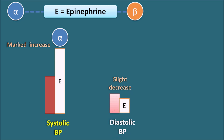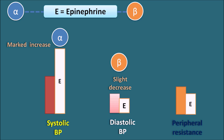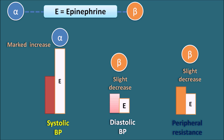The slight decrease in diastolic blood pressure by epinephrine is because of its selectivity toward beta receptors. As epinephrine acts on beta receptors, it produces vasodilation resulting in a fall in blood pressure. Because epinephrine is not completely selective for beta receptors, only a slight decrease in diastolic blood pressure is observed. Peripheral resistance is also slightly decreased, attributed to the vasodilatory response of epinephrine through beta-2 receptors.